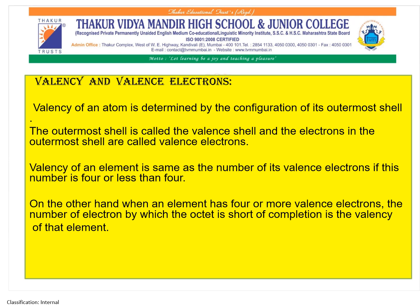Valency is the combining capacity of an element, determined by the configuration of its outermost shell. The electrons in the outermost shell are called valence electrons. If the valence electrons are fewer than four, the valency equals the number of electrons in that shell. If the outermost shell has four or more electrons, the valency is determined by how many electrons are needed to complete an octet.